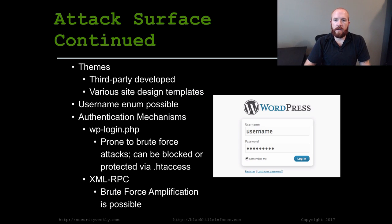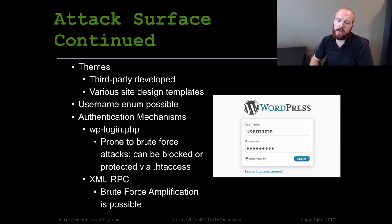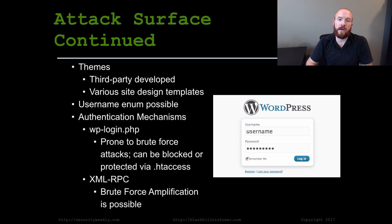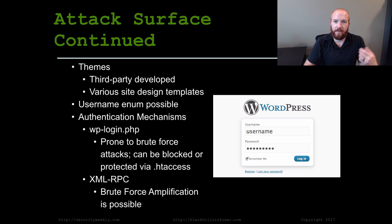Username enumeration is something that is very common with WordPress sites. It's very easy to enumerate the usernames of users who would potentially be able to authenticate to a WordPress site — it's not a hidden mechanism at all. Another piece of the attack surface is the actual authentication mechanisms to the site. You have the standard login to WordPress at wp-login.php. By default, if you have a WordPress site set up, they don't actually have any account lockout policy, so you can literally just brute force accounts all day long.